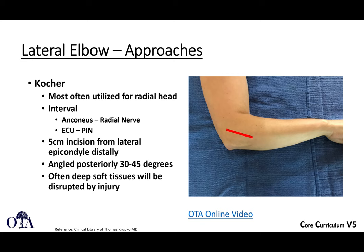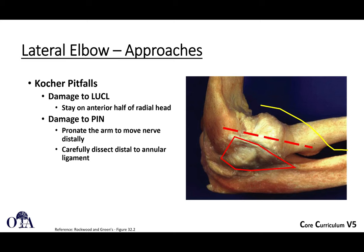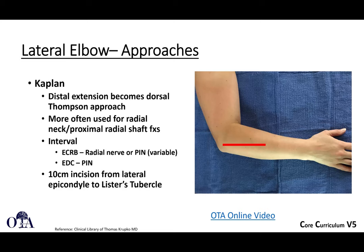Approaches to the radial head are generally lateral-based. The Kocher approach is one of the most commonly used, with the interval between the anconeus and the ECU. This keeps you well away from the posterior interosseous nerve. The incision is angled posteriorly about 30 to 45 degrees and places you in line with the lateral ulnar collateral ligament, so care is needed not to completely disrupt it. Pronating the forearm generally keeps the PIN safe with this approach.